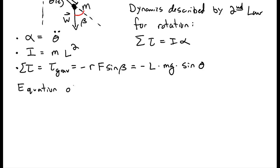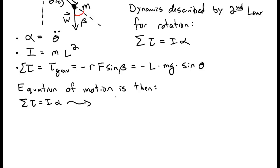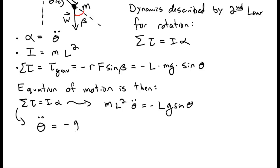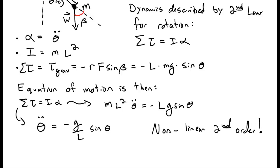Putting all this together, we get an equation of motion for the pendulum from the second law, which looks like mL squared theta-double-dot equals minus mgL sine of theta. Or, making that look a little nicer: theta-double-dot equals minus G over L times sine of theta. This is a nonlinear second-order differential equation.